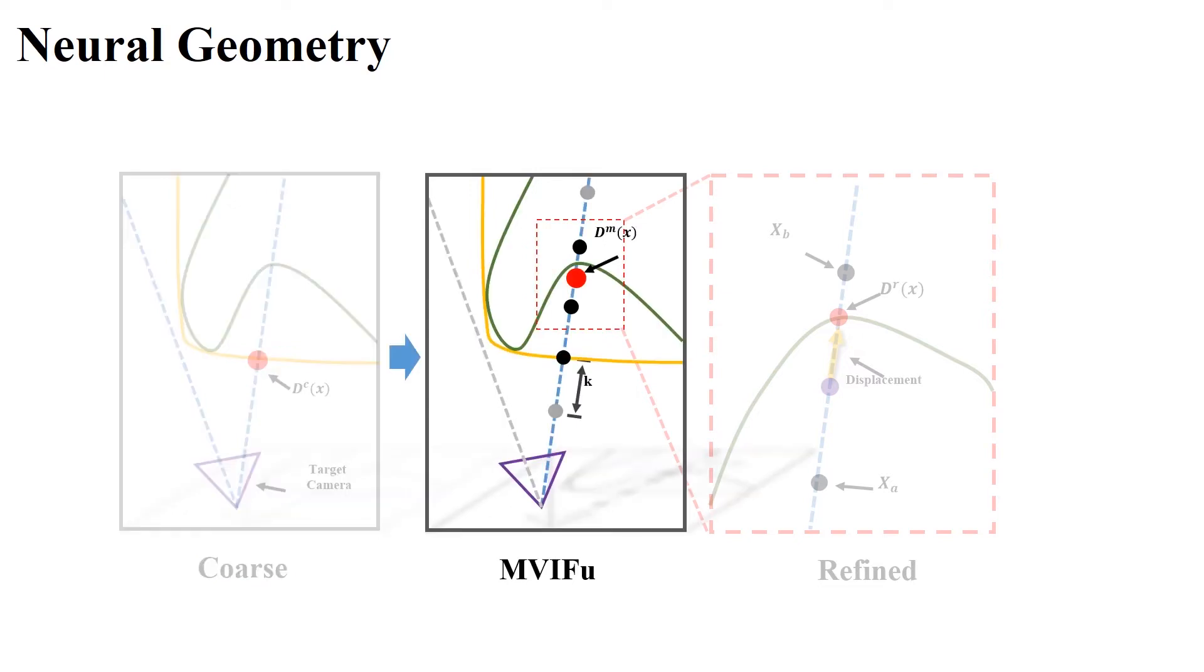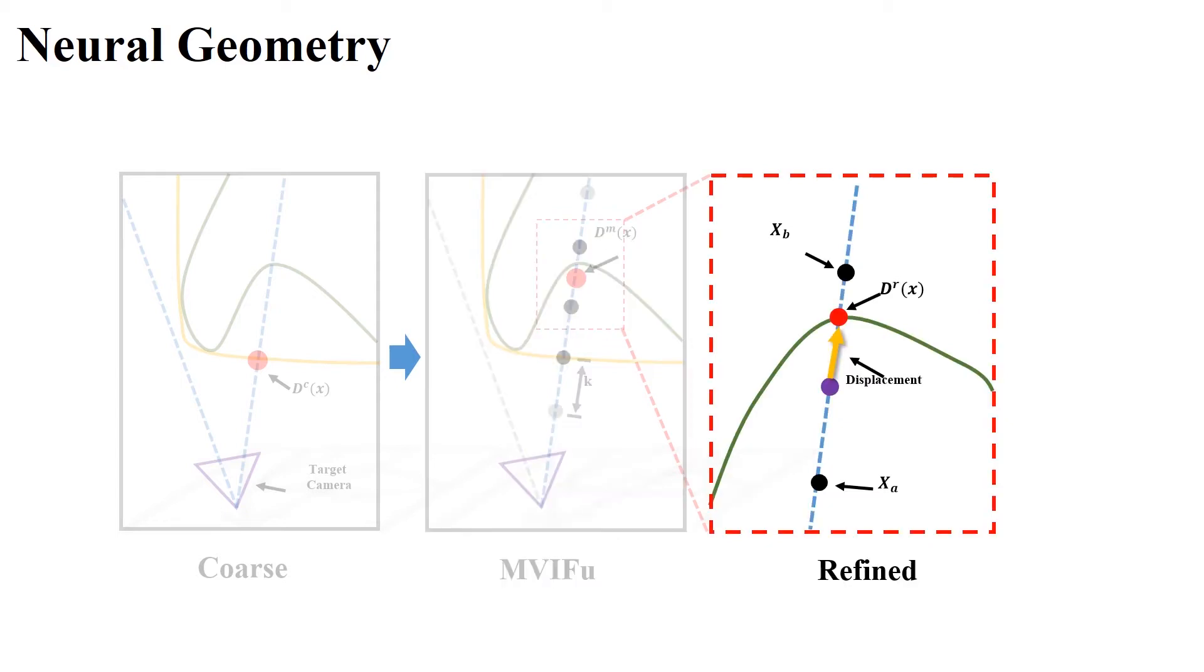When we render a novel view, we only need to reconstruct the geometry of target views. Thus we combine the multi-view implicit function and ray-marching algorithm with fixed steps to generate the depth geometry based on the coarse geometry. But the accelerated MVIFu is still over-smooth because of depth averaging and fixed steps.